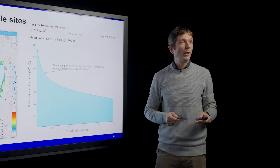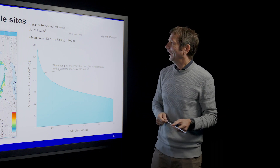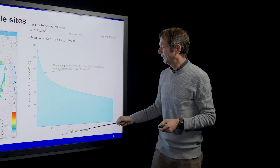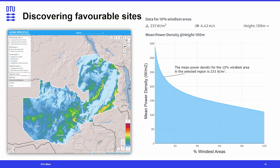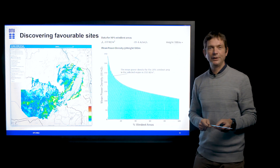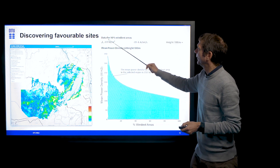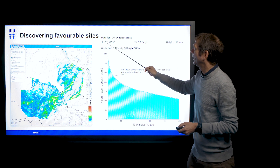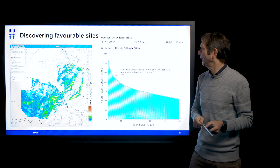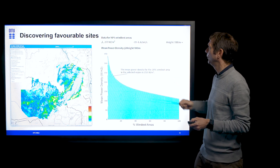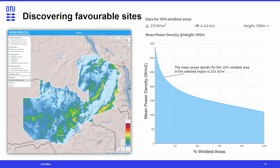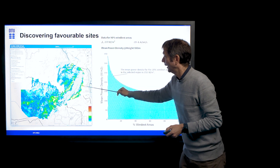In the Global Wind Atlas, we developed a way to present that to the user using a graph showing the mean power density against the percentage of windiest areas. This graph captures the properties and statistics of the best areas in the country. For example, for the 10% windiest areas, we see a mean power density of 233 watts per meter squared and a mean wind speed of 6.42 meters per second at 100 meters height. What we're most interested in for wind energy development is the areas with a peak in power density, which we can identify by looking at the map.